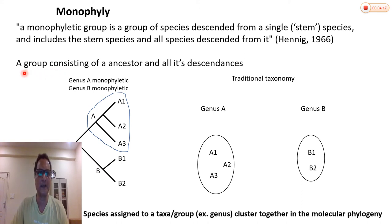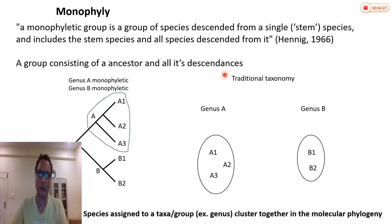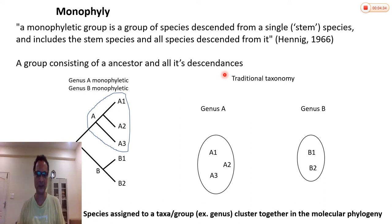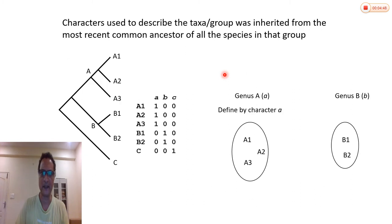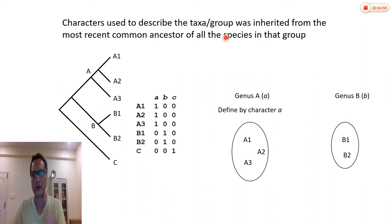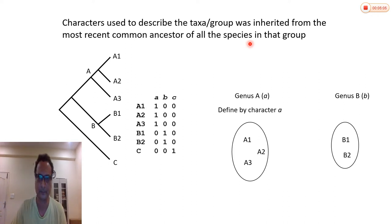In simple terms, if you have a bunch of species assigned to a particular genus, or a bunch of genera assigned to a particular family, when you build a phylogeny, do they all cluster together? In terms of cladistics, it really means that the character used to describe that group was inherited from the most recent common ancestor of all the species in that group.